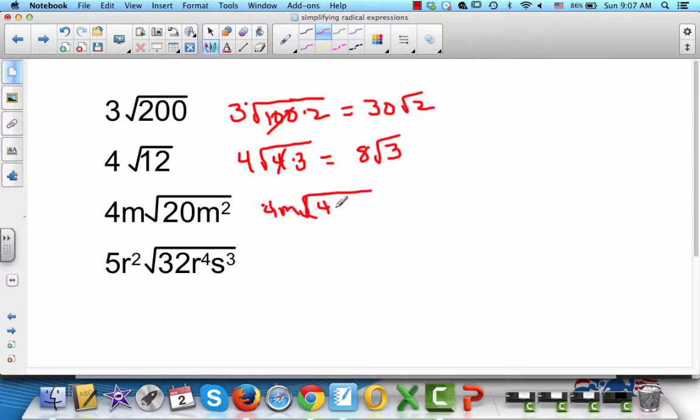4 times 5 times m squared. Square root of 4 is 2. 2 times 4 is 8. The square root of m squared is m. m times m is m squared. And you're left with 5 on the inside as your radicand.